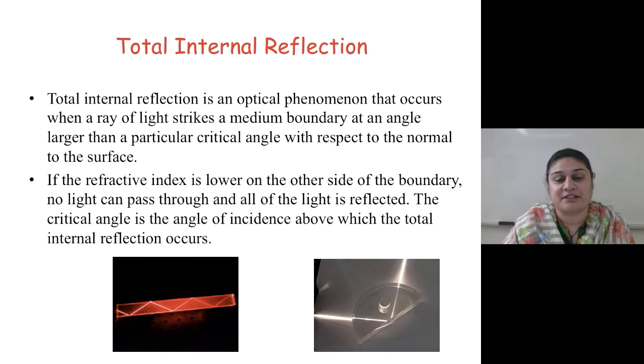If the refractive index is lower on the other side of the boundary, no light can pass through and all of the light is reflected.